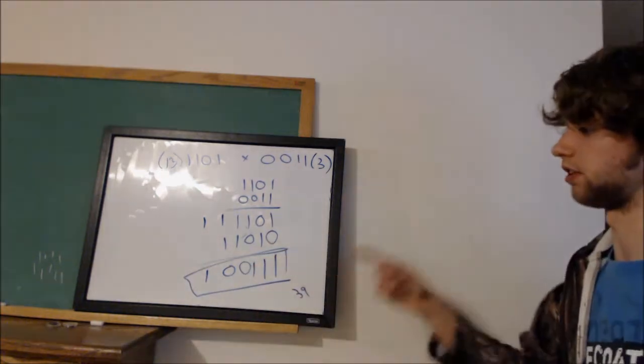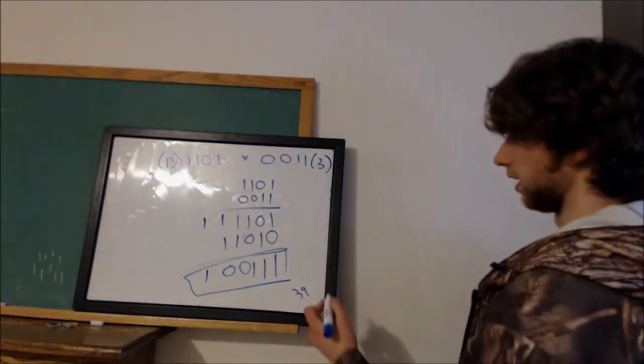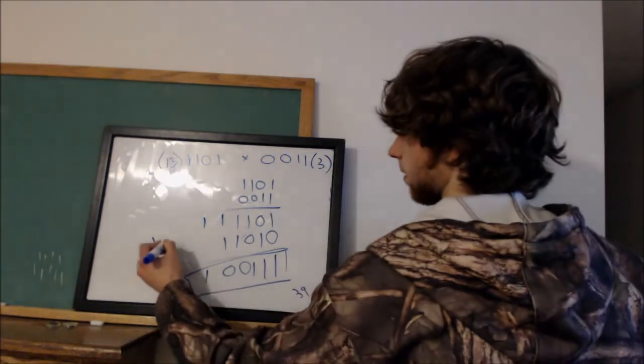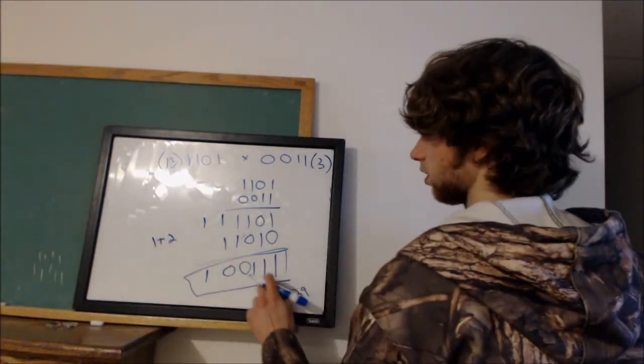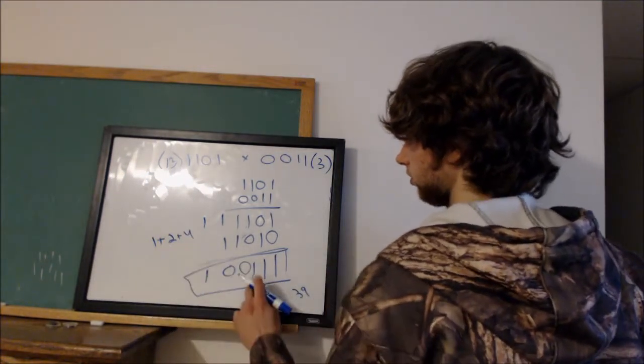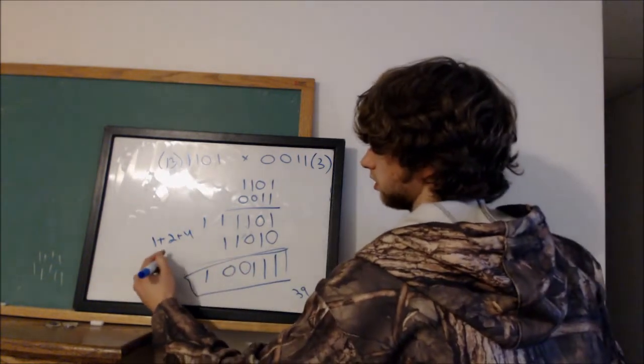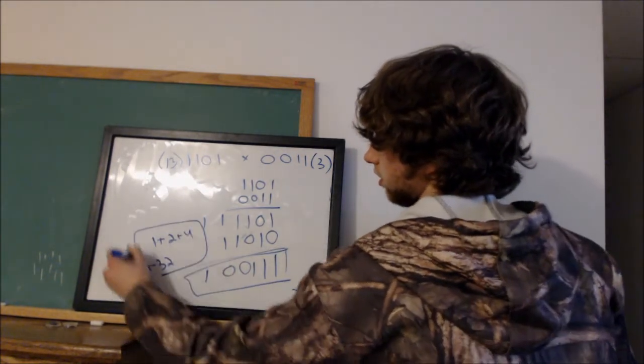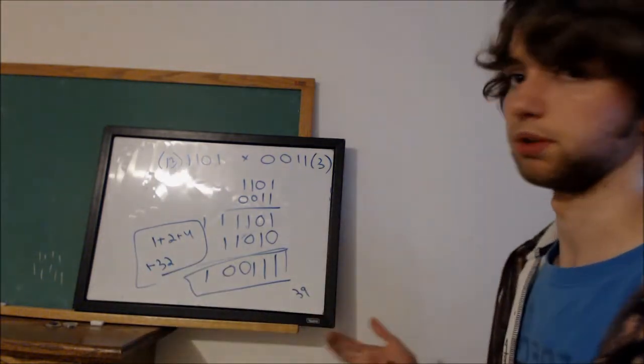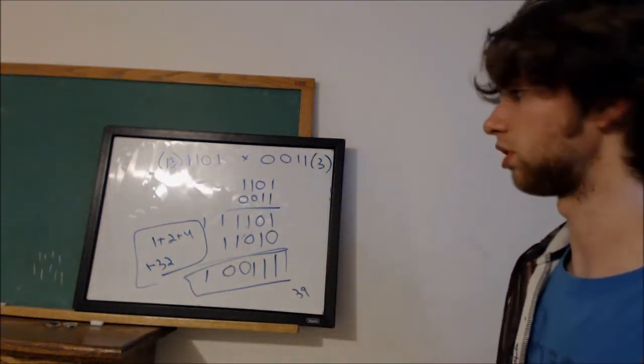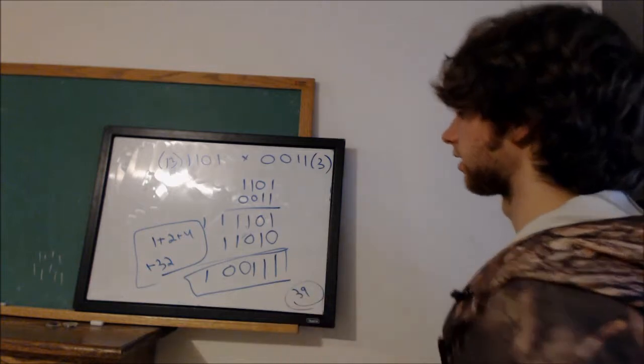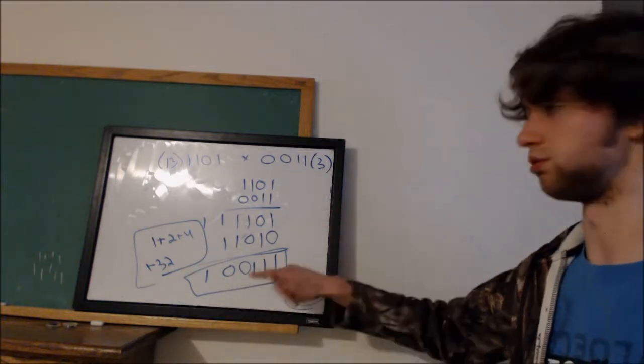Now, we can figure out if this is right to see if it's 39. We have 1 plus 2 plus 4. No 8, no 16, plus 32. So, you have 32 plus 4. That would be 36 plus 2. 38 plus 1, 39. So, this is, in fact, the correct answer to this problem.